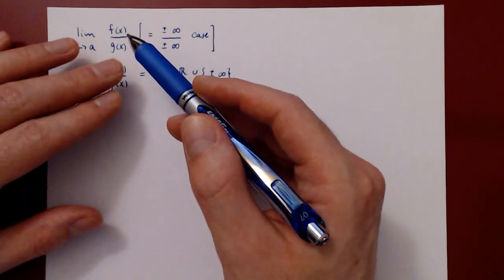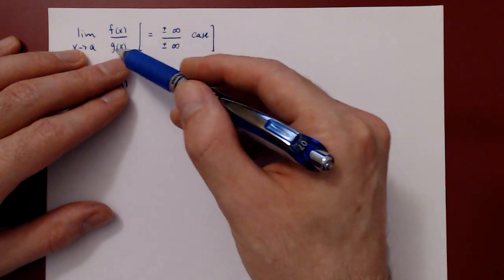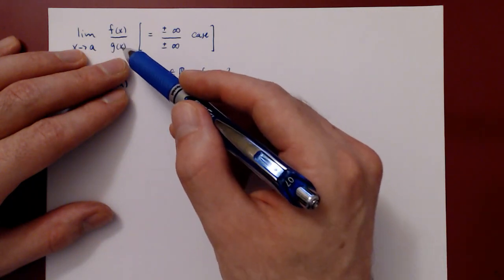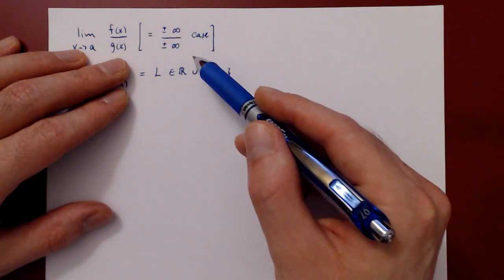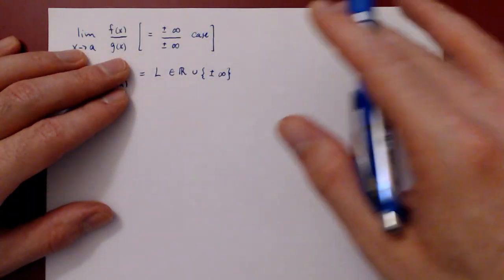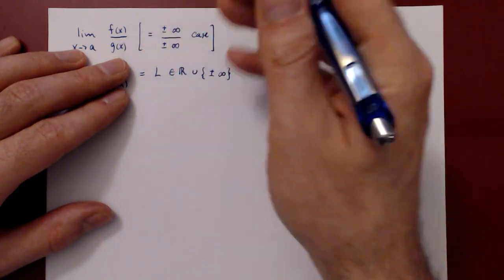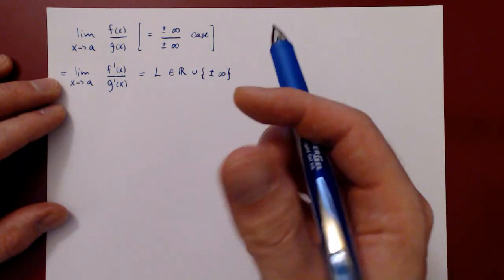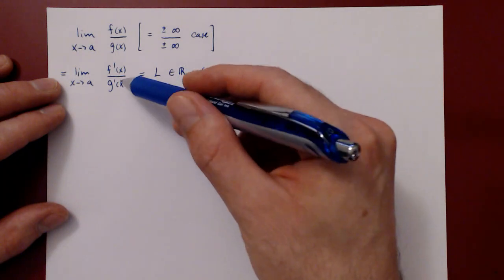If f grows much more rapidly than g, then f should take over the fraction and drive it to blow up to infinity. On the other hand, if g grows much more rapidly than f, then g should take over the fraction and make the whole fraction get closer to zero. And there could be a balance — if both f and g grow at roughly the same rate, they should balance each other out to some real number. And that's what the new limit is measuring: it's comparing the rate of change of each function, looking at how quickly f is growing versus how quickly g is growing.